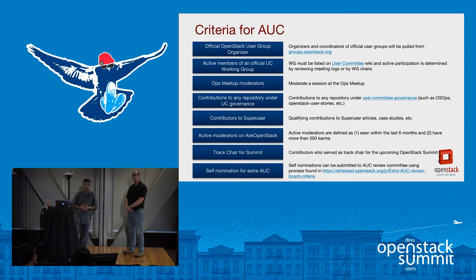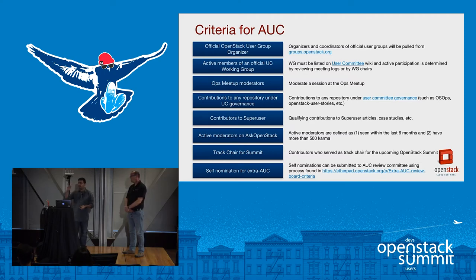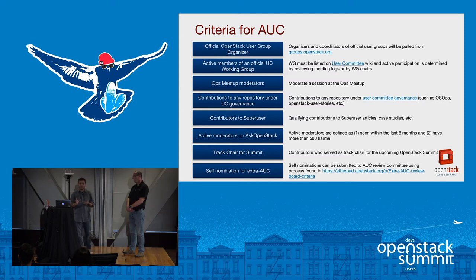And then there's Ask OpenStack — a resource where anyone using OpenStack or with a general question can post it. There's a group of people that keep an eye out for new questions, and using their knowledge, they share what they know and try to provide an answer. Ask OpenStack moderators are eligible as well. The criteria is based on a karma system in Ask OpenStack — the cutoff is currently set at 250 karma, though it should be 500. You must also be active within the last six months, because karma doesn't decay.